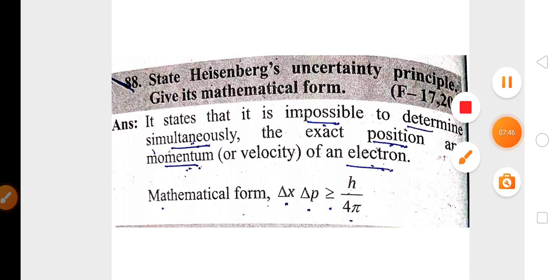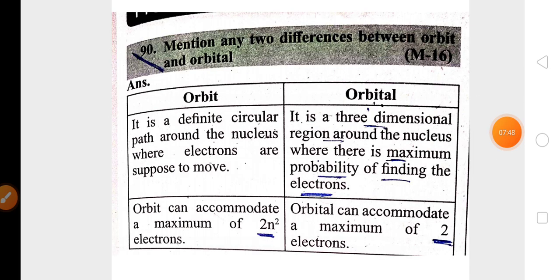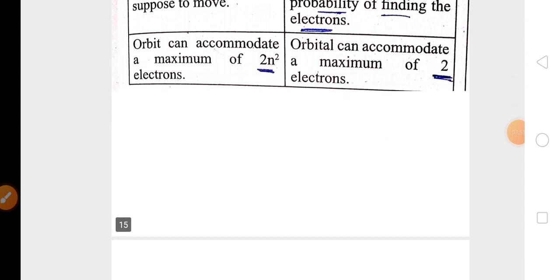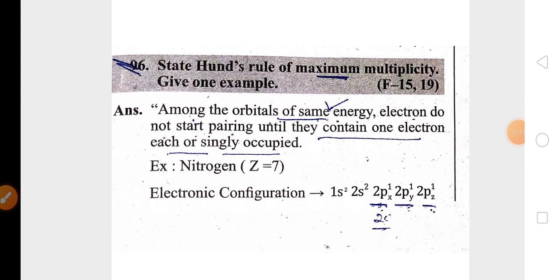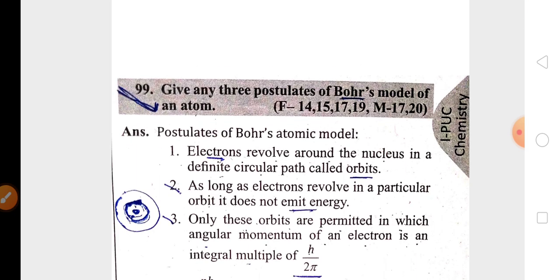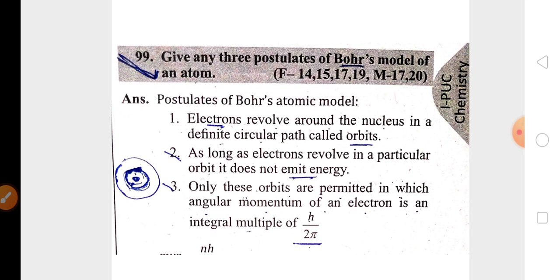Another two-mark important question is the difference between orbit and orbital. Hund's rule of maximum multiplicity with example is also highly important for two marks. The three postulates of Bohr's atomic model are very very important for three marks. These include: electrons revolve around the nucleus in a definite circular path called an orbit; electrons never lose or gain energy as long as they revolve in the same orbit; and angular momentum is calculated as h/2π.